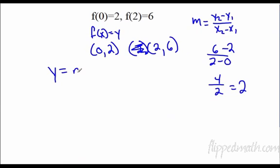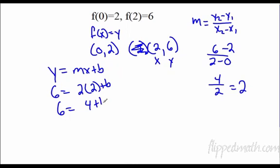y equals mx plus b. We can use any of these we want. I'll use this one, x and y. So I've got 6 equals, my m was 2, my x is 2, my b I don't know. 6 equals 2 times 2 is 4, plus b. Subtract 4, and b equals 2. So y equals 2x plus 2.